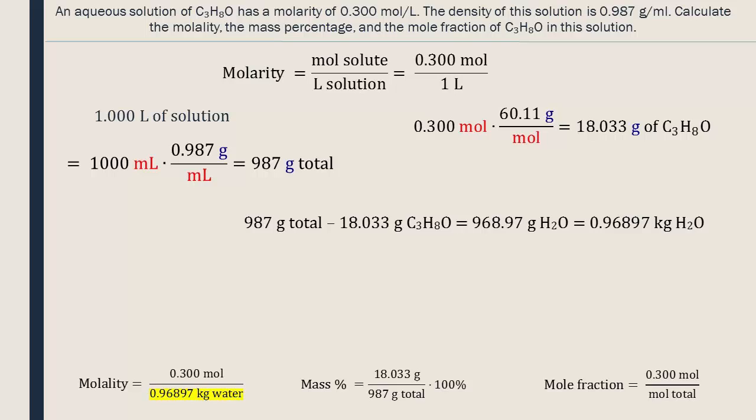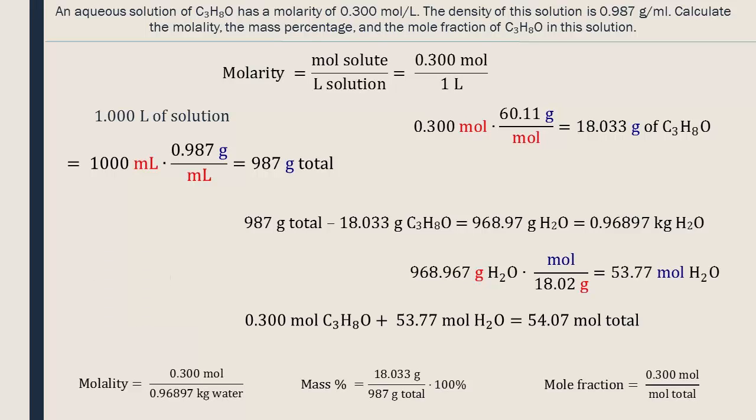To calculate the total number of moles for the mole fraction equation, we need to find out how many moles of water we have by dividing the mass of the water by its molar mass. To finish, we add the moles of solute and water to find the total number of moles in the solution. Then this value can be inserted into the mole fraction.